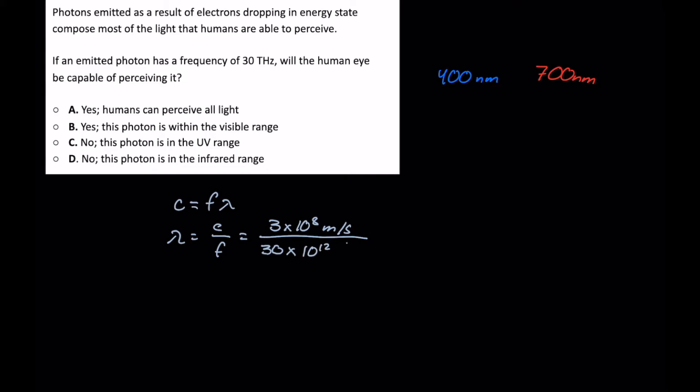The next thing we might want to do is 3 times 10 to the 8th meters per second. We'll keep that the same. And then we'll divide 30 by 10.